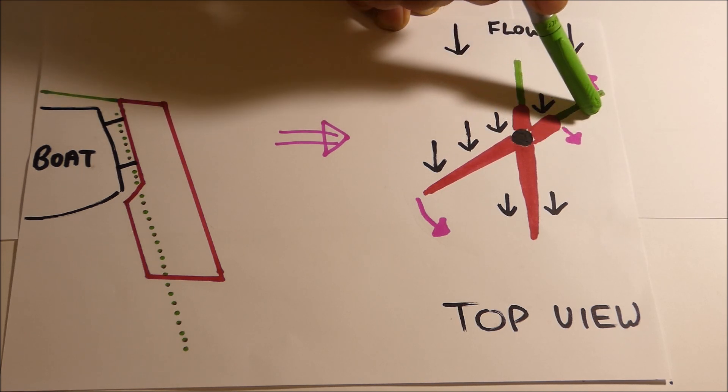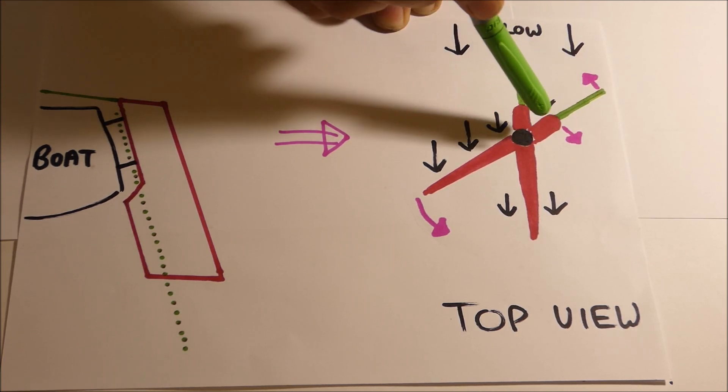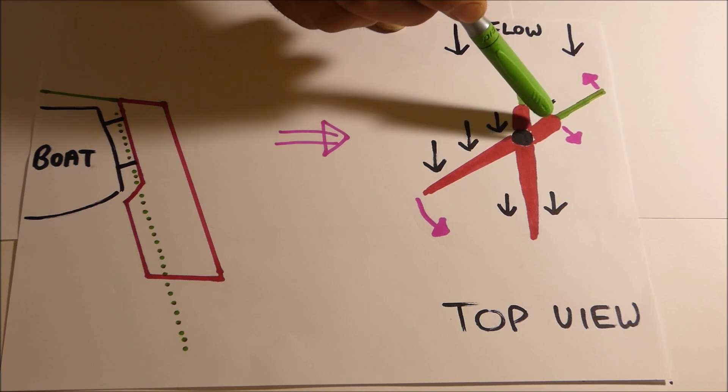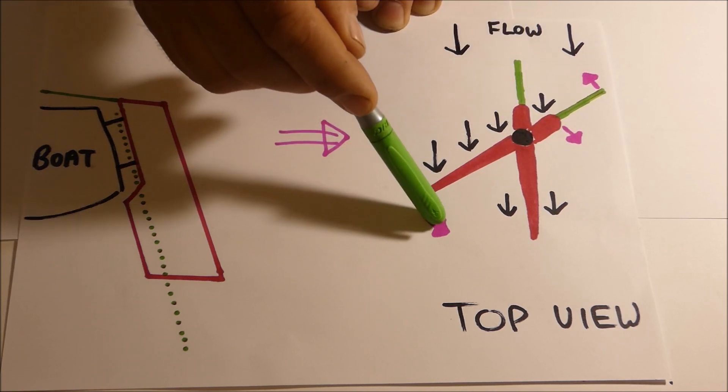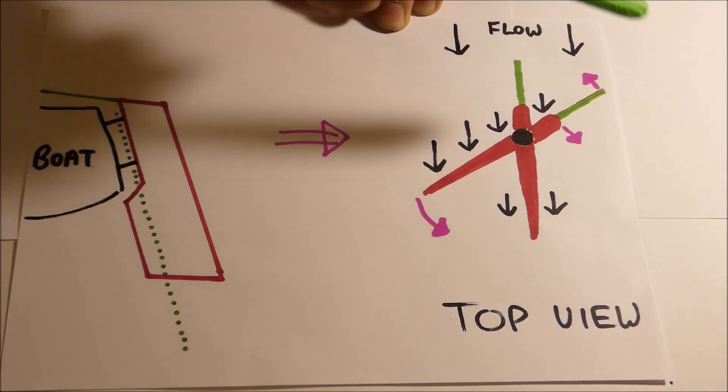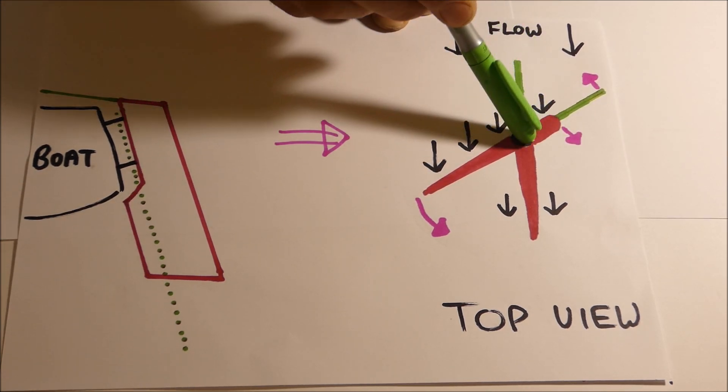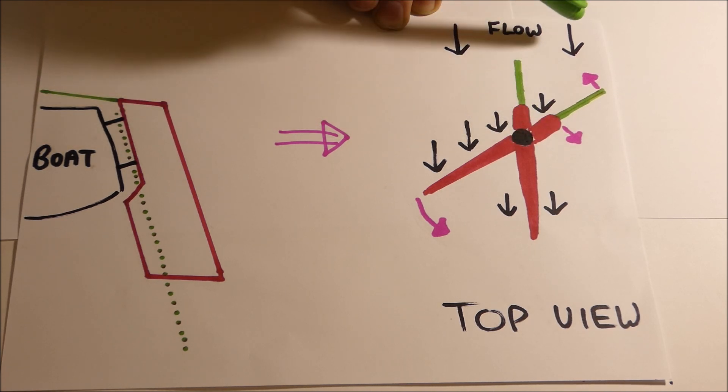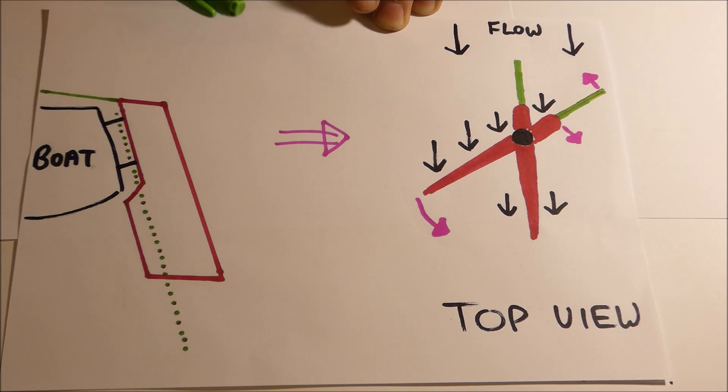Now if you made that area in front of the rotation point too big, you'd have too much force here, too little force here, and the rudder would actually swing over uncontrollably and lock in a turning position. So it's important to get that amount of rudder in front of that pintle point actually the right amount. And like I say, it's about 18%.